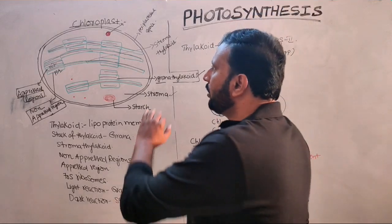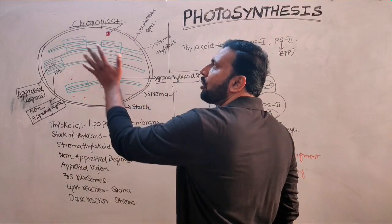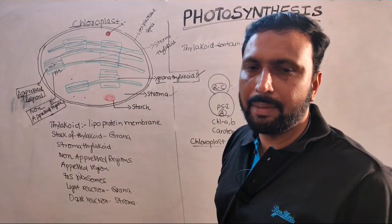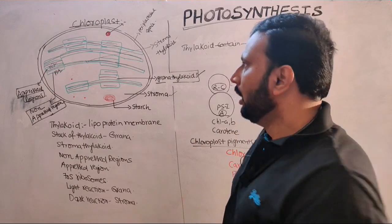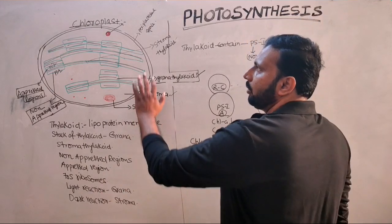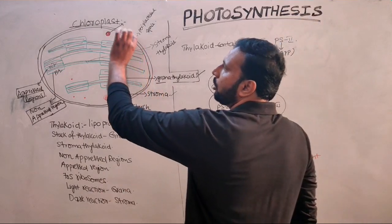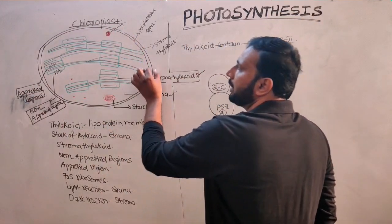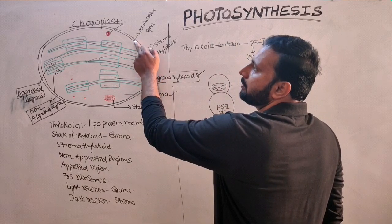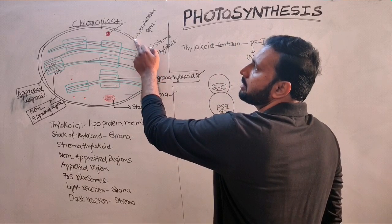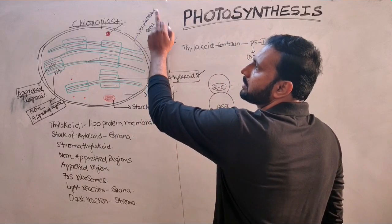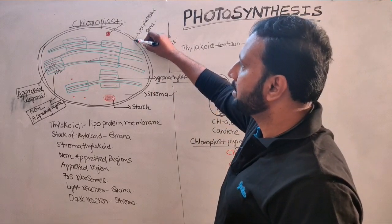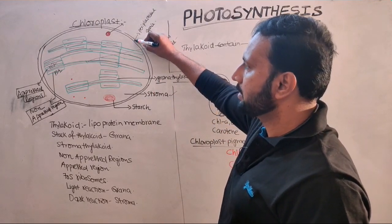Generally, chloroplasts are oval in shape, and more number of chloroplasts are present in mesophyll cells. The chloroplast is surrounded by two membranes. The space present between the two membranes is called the periplastidial space.